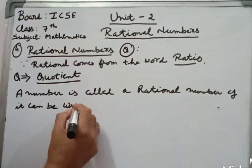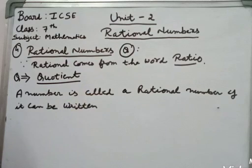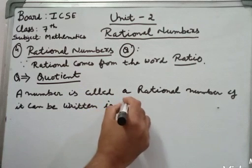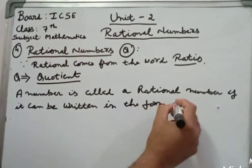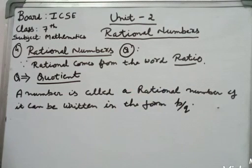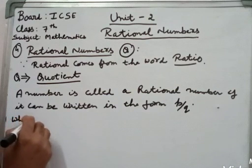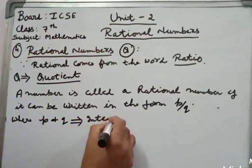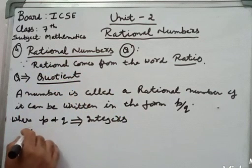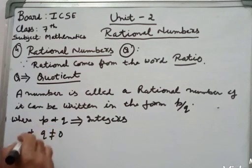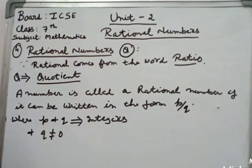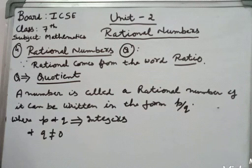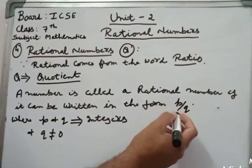A number is called a rational number if it can be written in the form P upon Q, where P and Q are integers and Q is not equal to zero. As you have read earlier, both natural and whole numbers including positive and negative numbers are called integers. These P and Q are integers, but Q is not equal to zero.